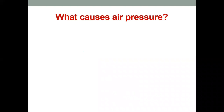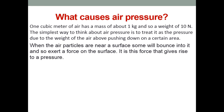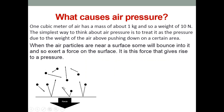What causes air pressure? It is the weight of the air. One cubic meter of air has around one kilogram of mass and about 10 Newtons of weight. When air particles near a surface bounce into it, they exert a force on that surface, and this gives rise to pressure. So air pressure comes from air particles bouncing and applying force on a surface.